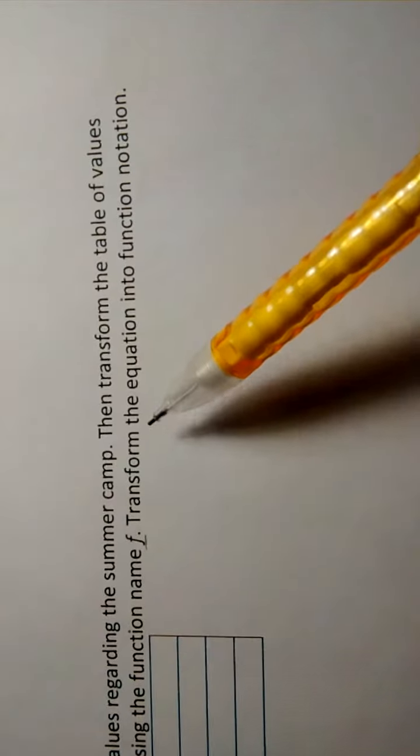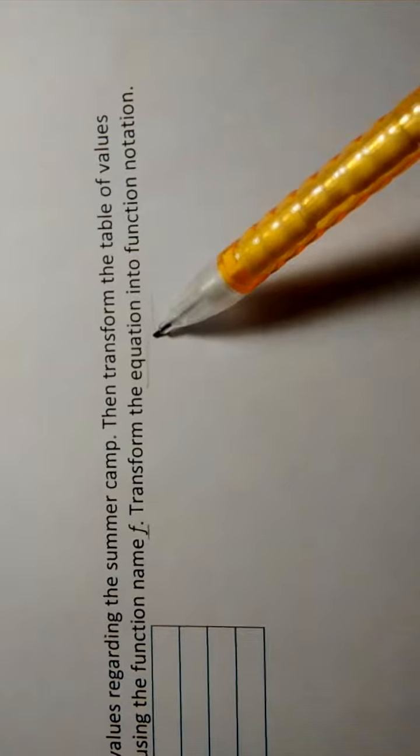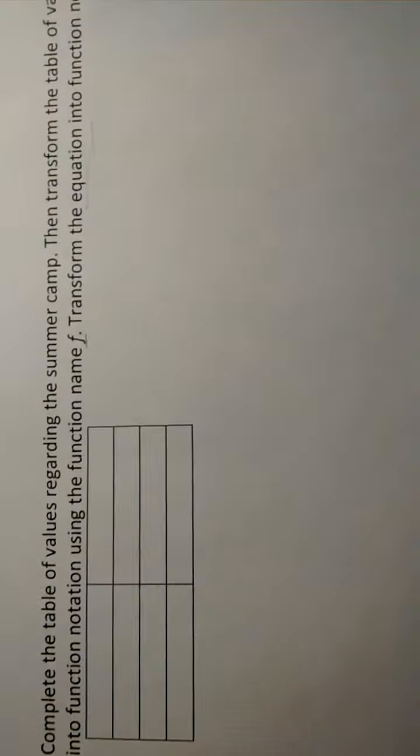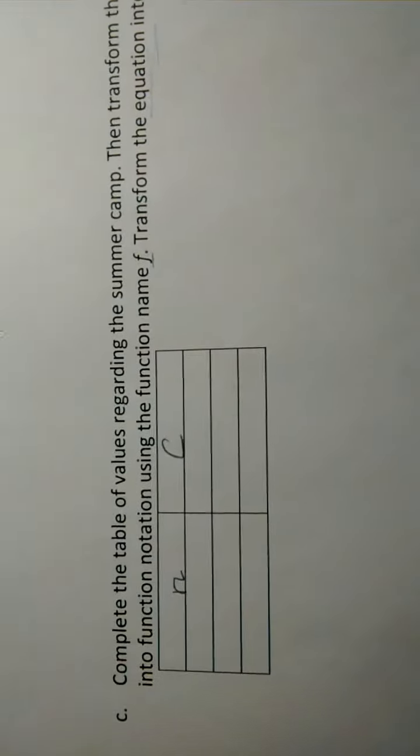And then transform the equation into function notation, the equation that relates the two variables. The two variables in our equation here were the number of campers, that was the input variable, and then C, the cost associated with that.